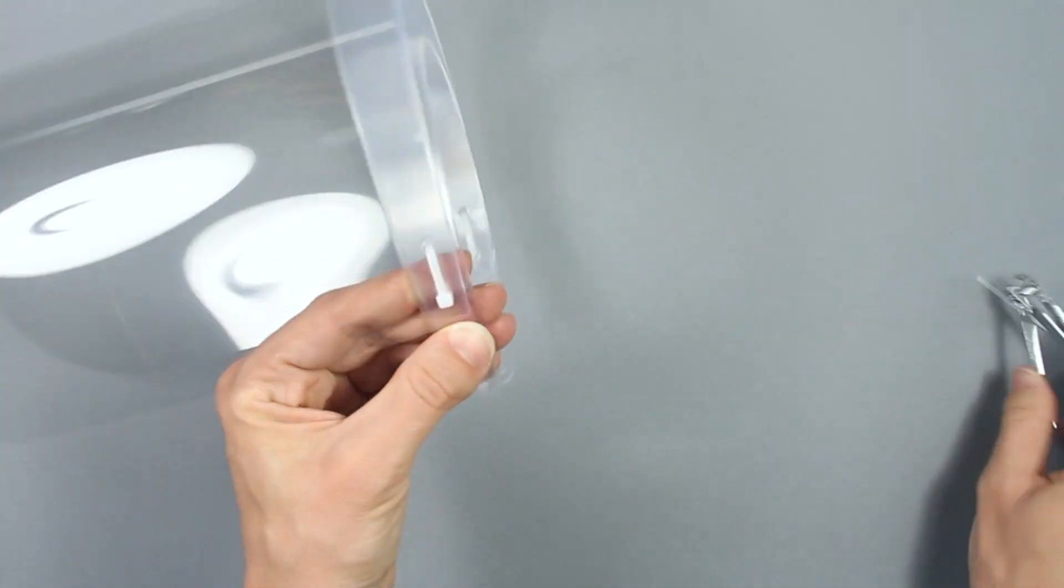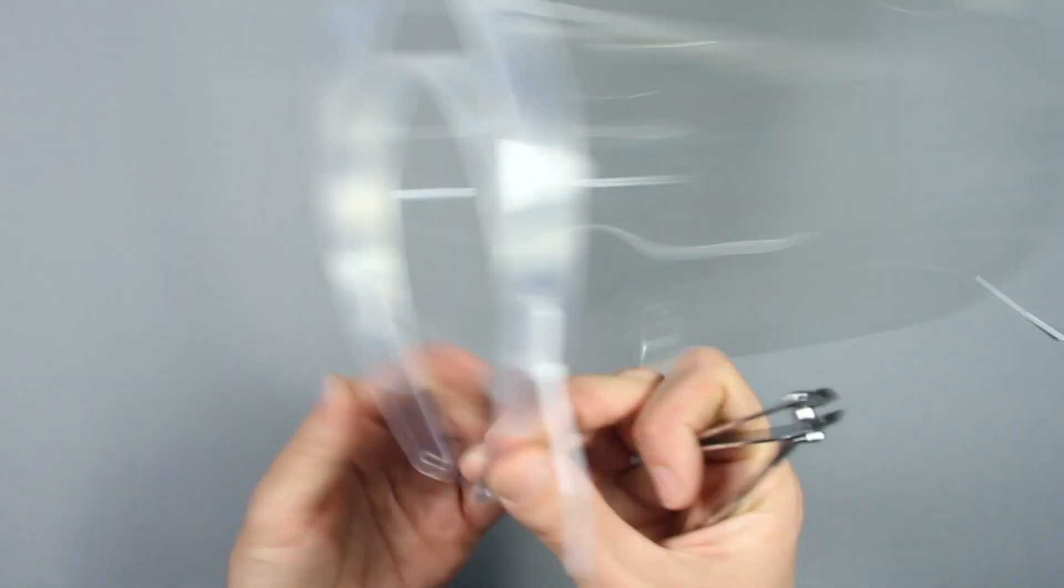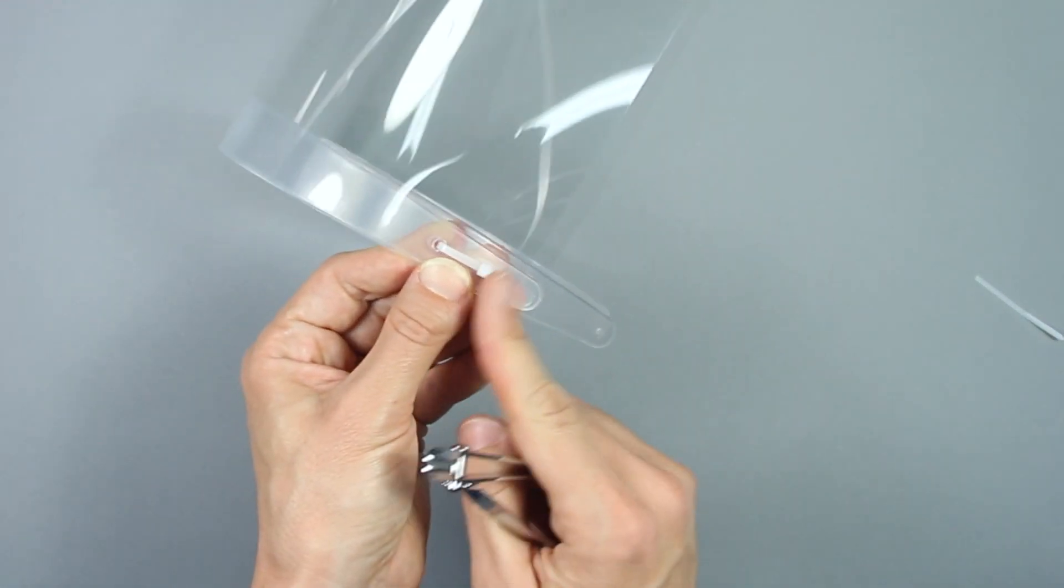Using a nail clipper, trim off the excess. This will create a rounded edge that isn't sharp.